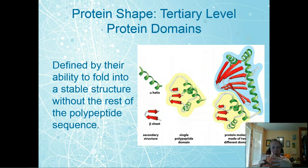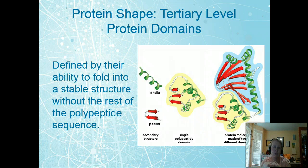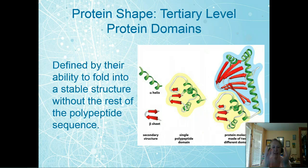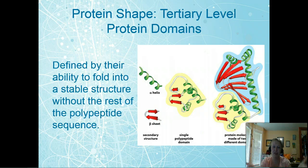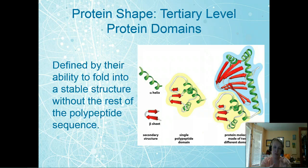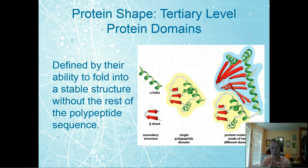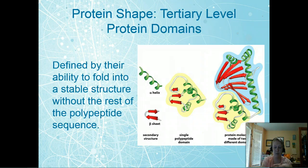One more aspect of tertiary is that when we have those foldings they fold into something called protein domains. A domain is defined by its ability to be a stable structure on its own without anything else. An alpha helix is nothing on its own and a beta pleated sheet is nothing on its own. When you take those together and fold them into a tertiary level they can with be on their own and they'll actually fold on their own and they'll survive on their own. They may not be a fully functional protein because they're missing all their other parts, but they are stable on their own.